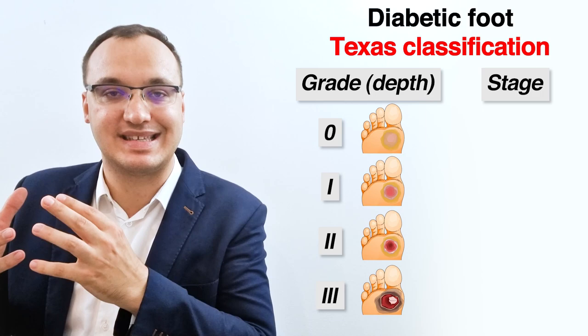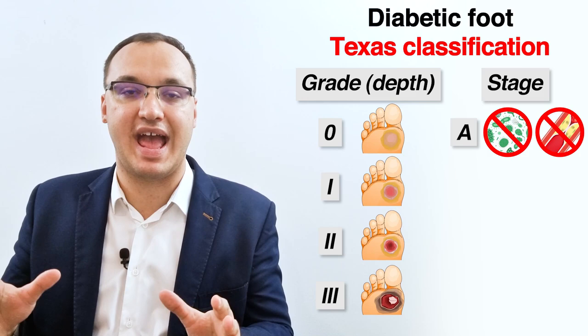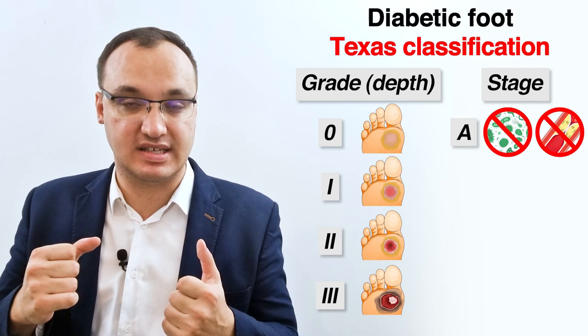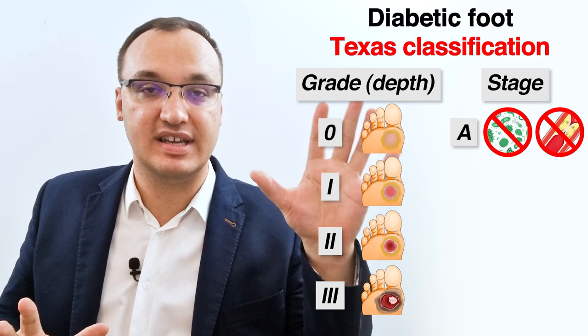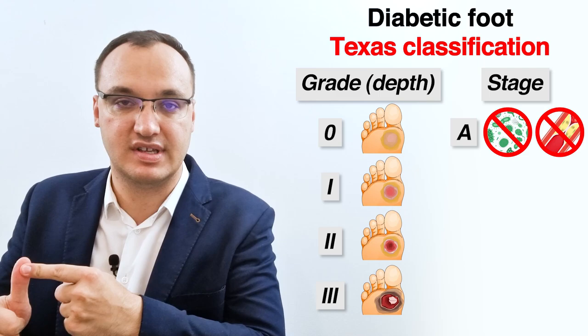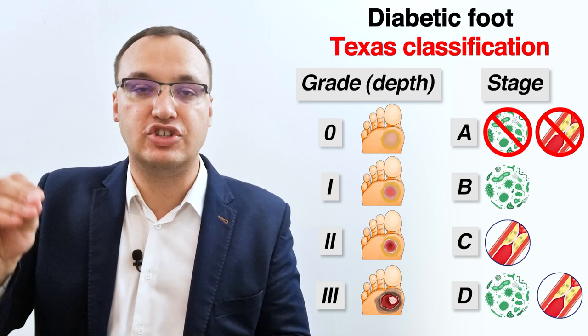Then you look at the stage. Stage means whether we have an infection or not. It is important to remember: grade uses numbers, and stage uses letters — A to D. Stage A means no infection and no peripheral artery disease. Stage B means we have infection. Stage C means we have peripheral artery disease. And stage D means we have both of them.